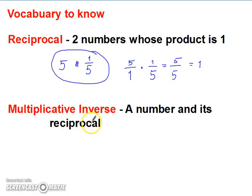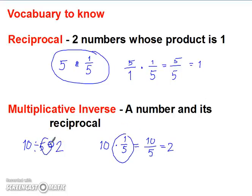Multiplicative inverse is a number and its reciprocal. So you can think of it as, say we did 10 divided by 5, that's going to give you 2. Well, if you have 10 times 1 fifth, that's going to give you 10 divided by 5, which is 2. So together, these two are your multiplicative inverses.